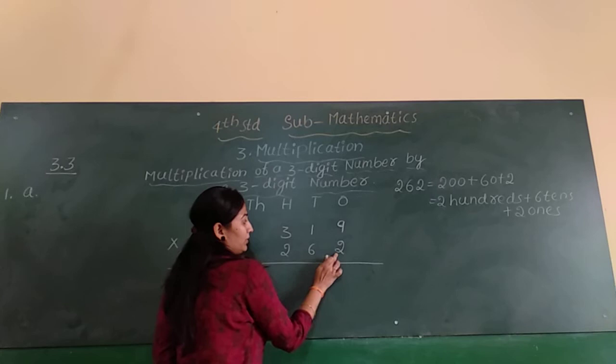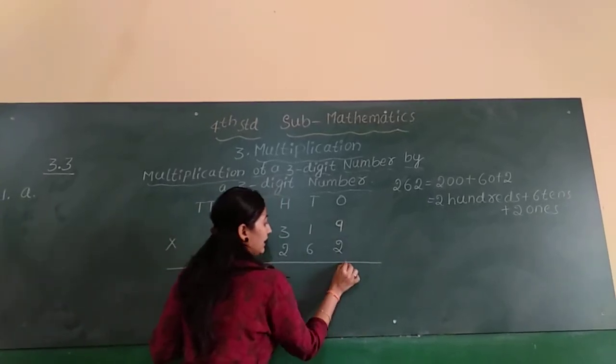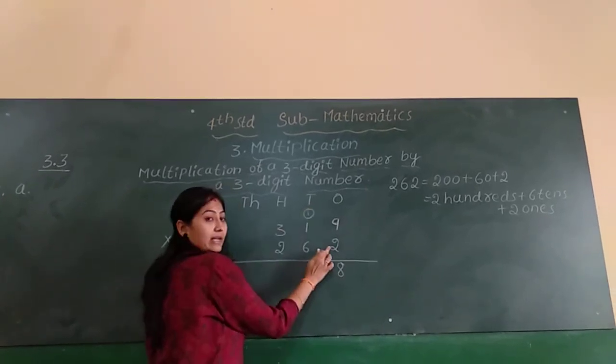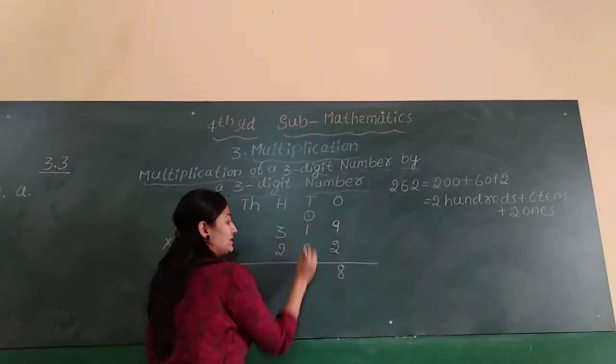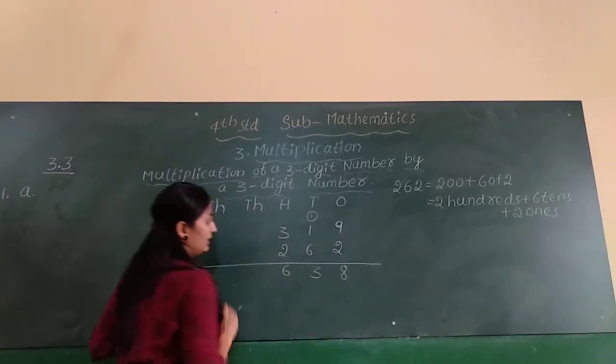First multiply by 2. 2 into 9, how much? 18. Write 8 in the ones place and 1 carry over here. Next 2 ones are 2, 2 plus 1 is 3. 2 threes are 6.